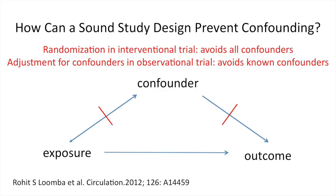How can a sound study design prevent confounding? In intervention studies, we can avoid it by randomization, and the key difference is that we can avoid all confounders — including unknown confounders. In an observational trial, we can do adjustment only for known confounders, not for those we don't know about.